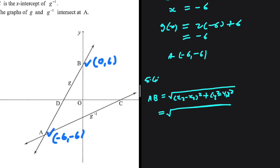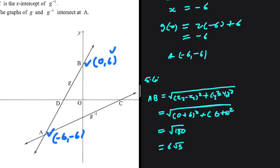Taking b as our second point, we're going to have 0 minus minus 6, so that is just 0 plus 6, squared, plus 6 minus minus 6, so that is 6 plus 6, squared. This gives us 6 squared which is 36, and 12 squared which is 144. 144 plus 36 is 180, so AB equals the square root of 180. You can further simplify that and get 6 square root of 5.